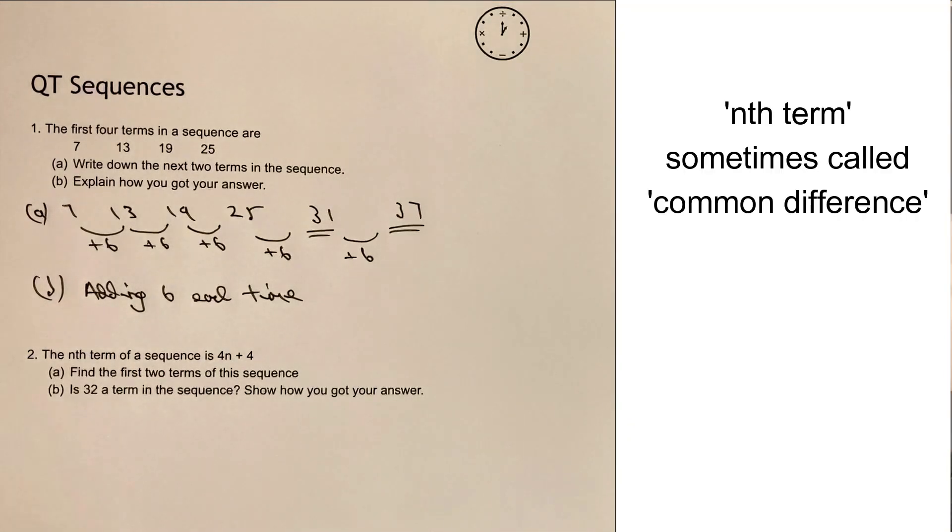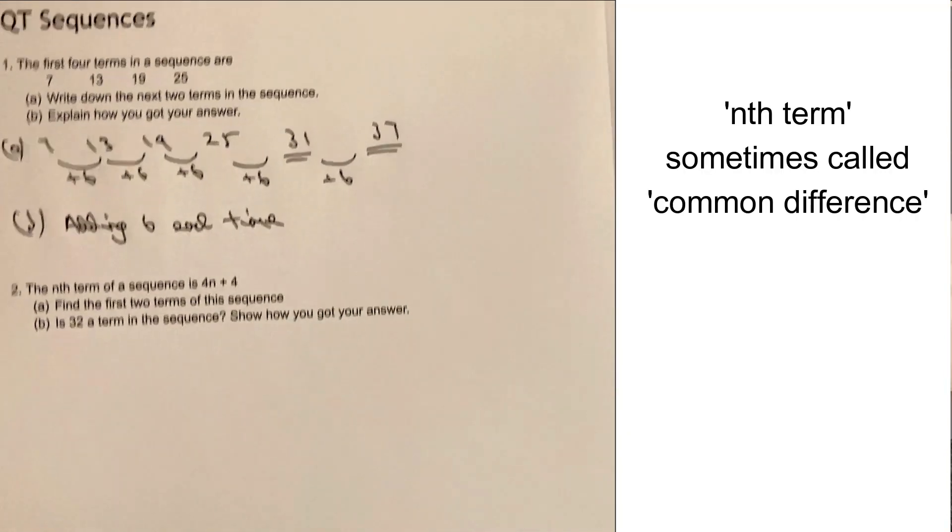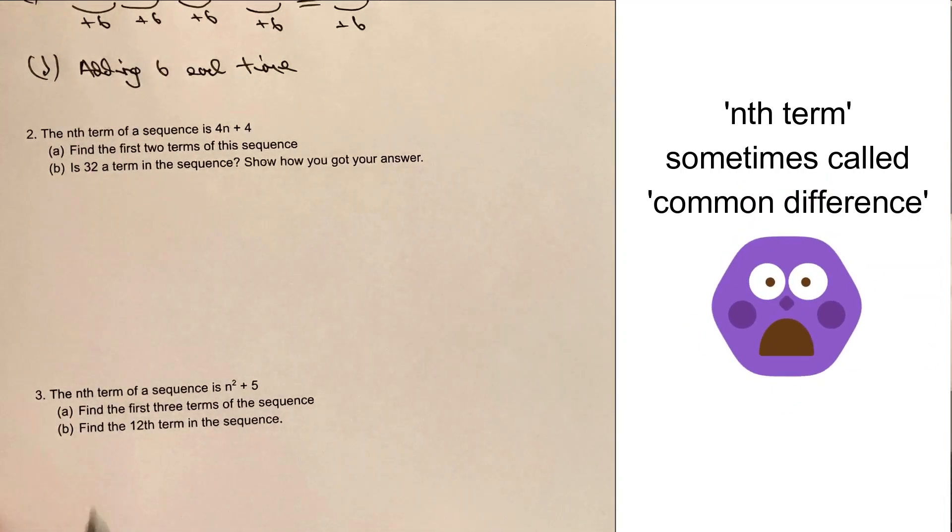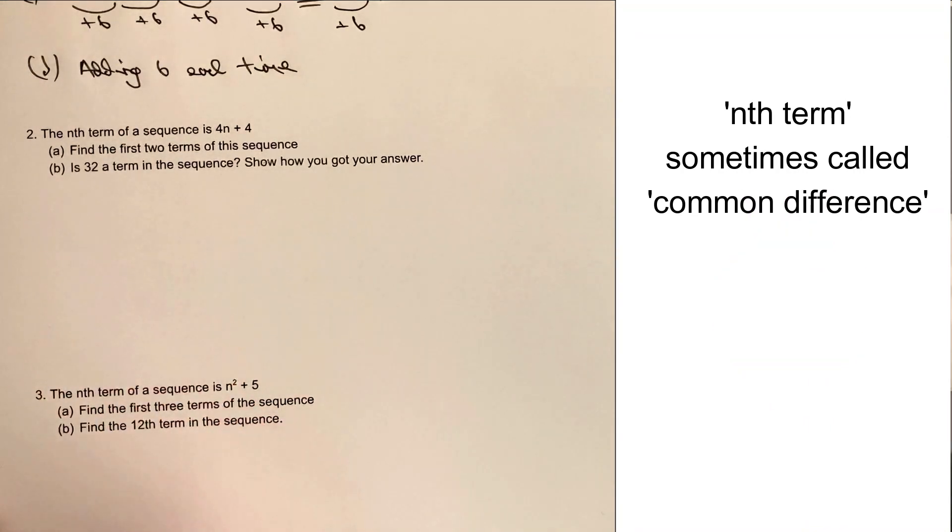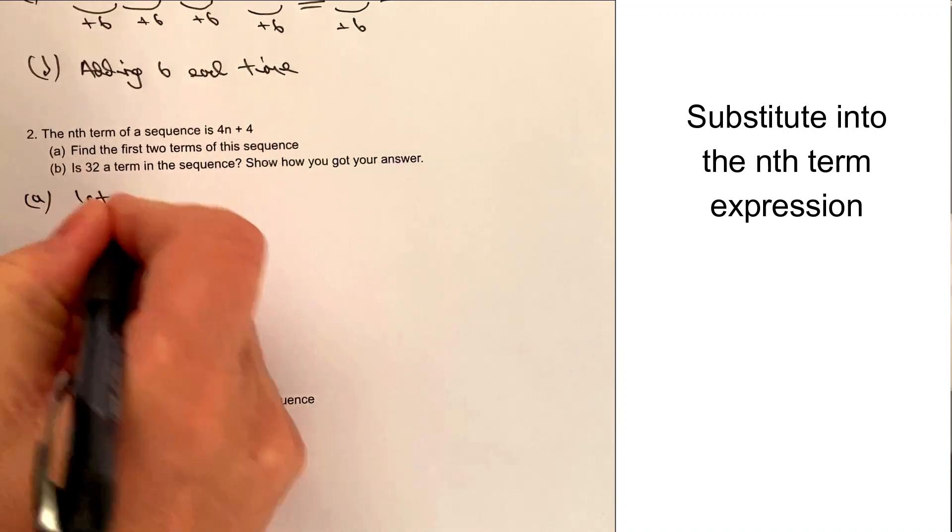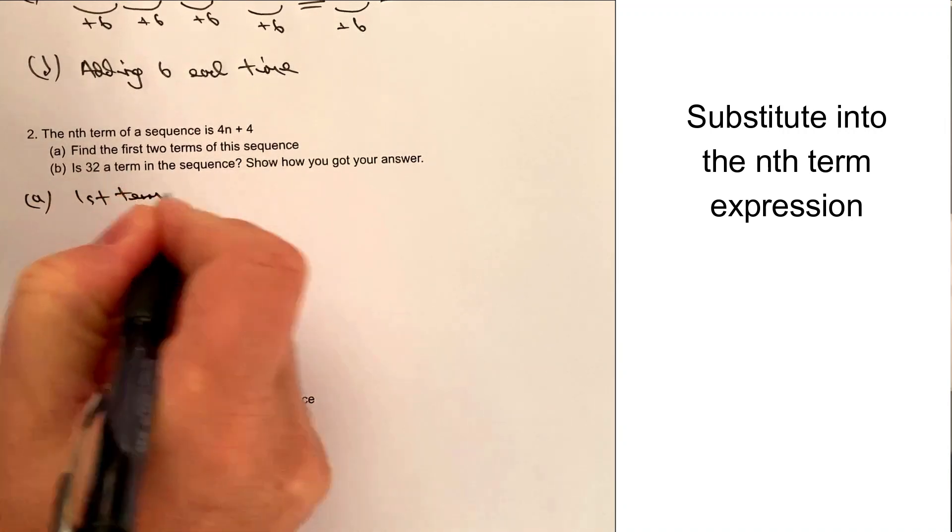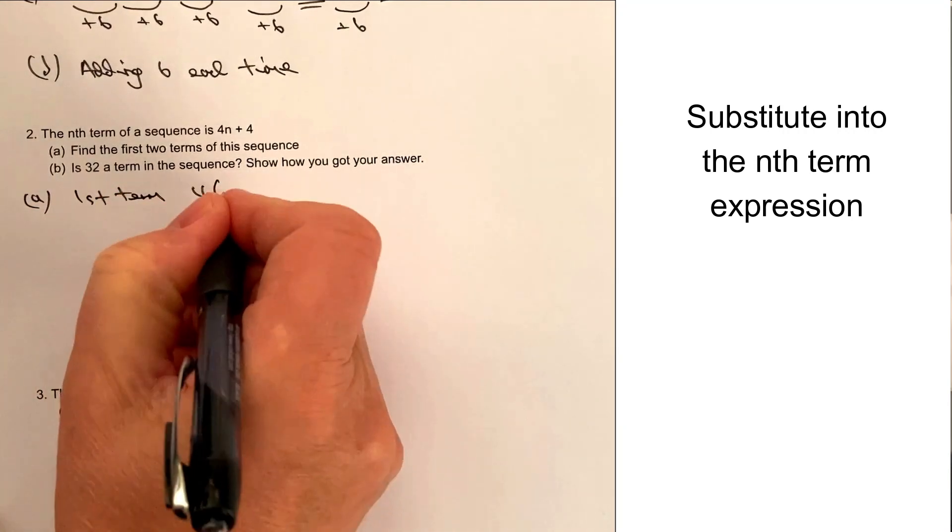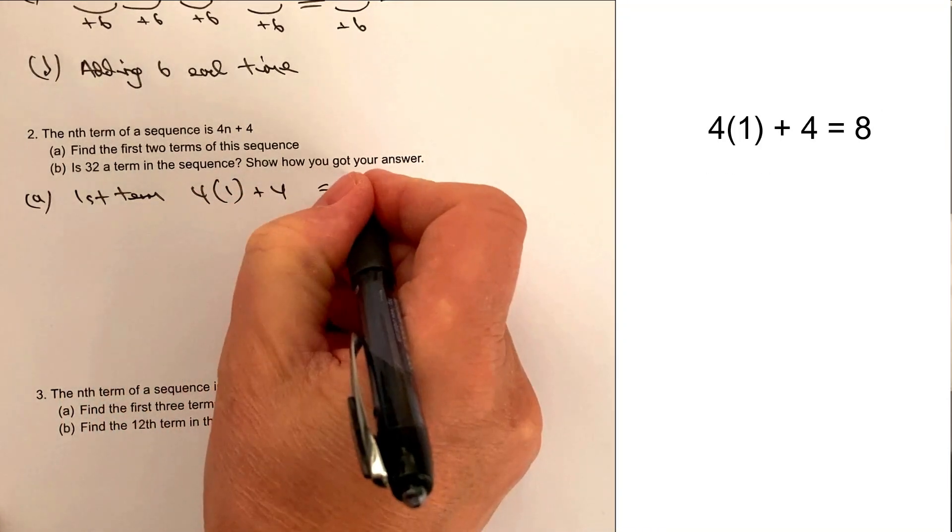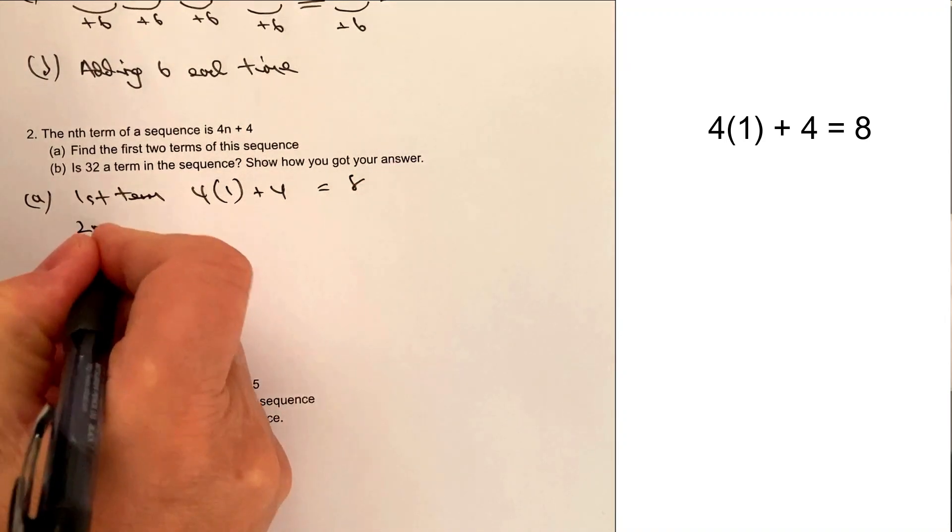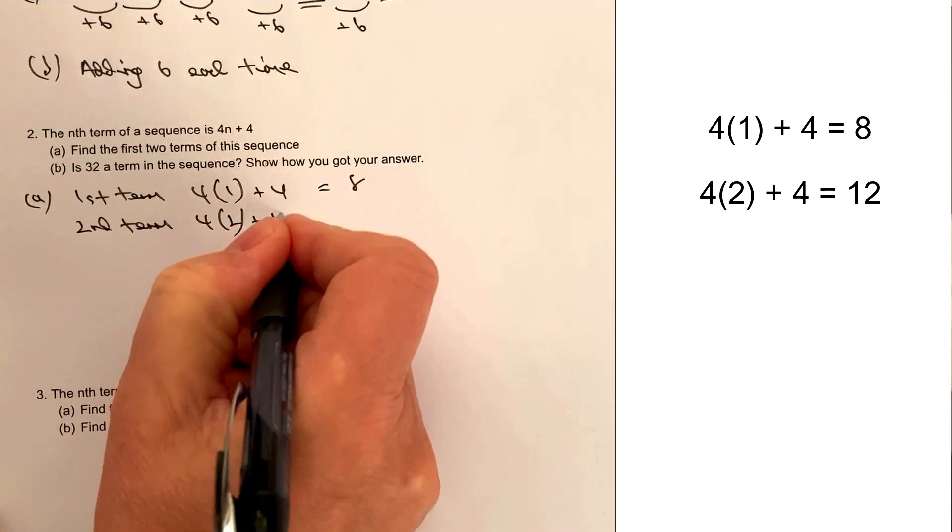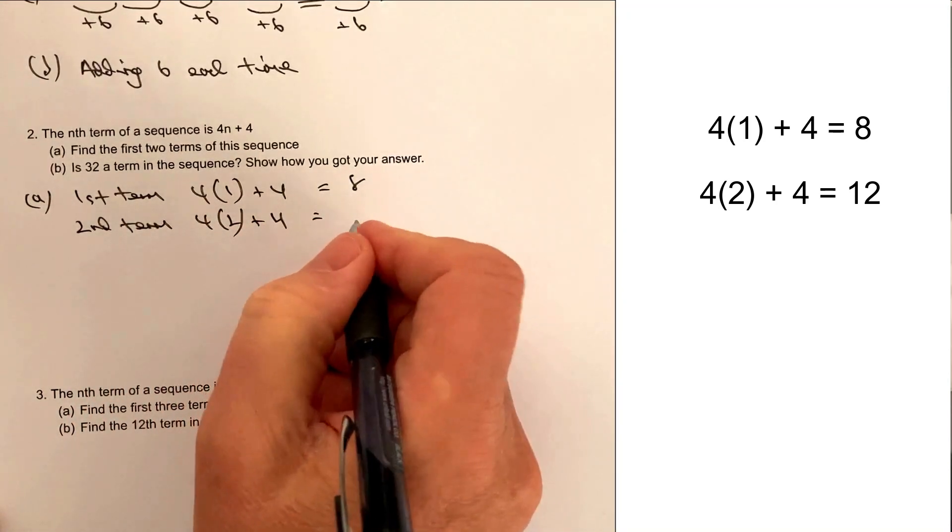In question number 2, we've got this introduction of this nth term idea, which is the sequence and how that sequence is described. It says find the first two terms in the sequence. So what we do is say the first term is going to be where we put the number in place of the n. So that's going to be 4 times 1 plus 4, which is going to be 8. That would be the first term. The second term is where we put the number 2 in place of the n, and that's therefore going to be 12.